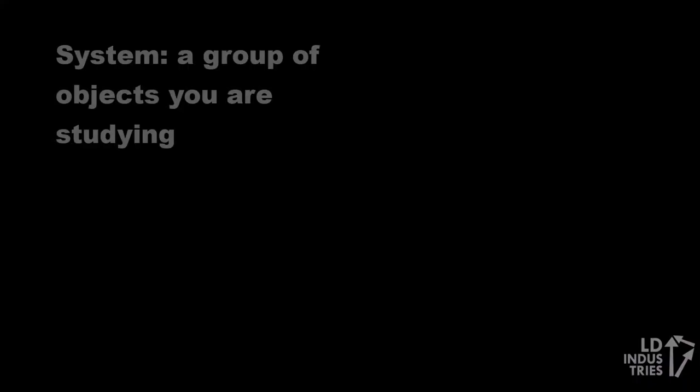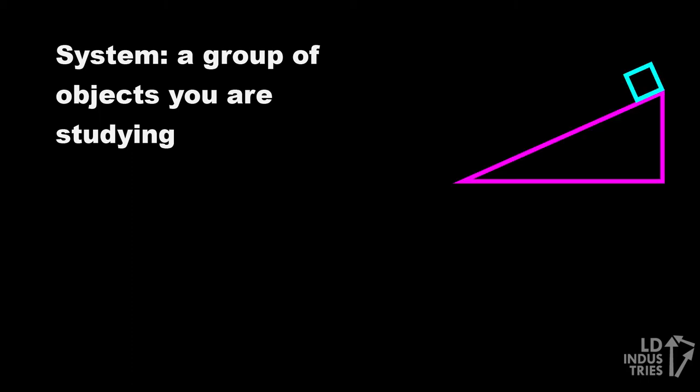Let's start with a system. A system is just a group of objects you decide you're going to study and talk about when you're doing some physics. So my system here is this hill and this box.